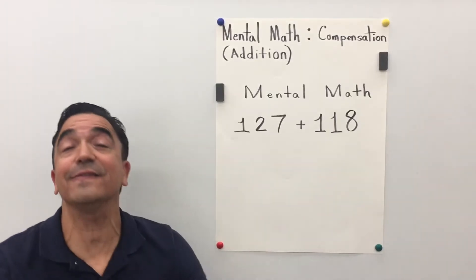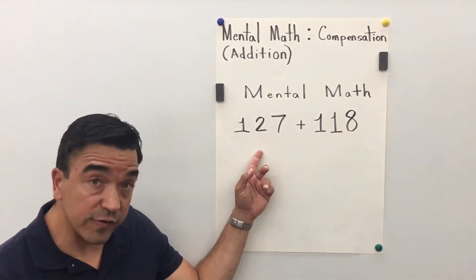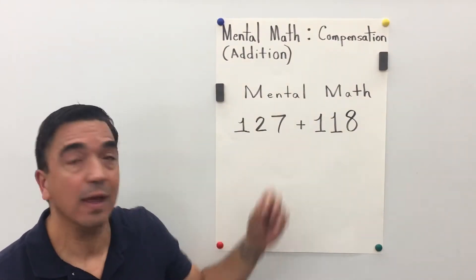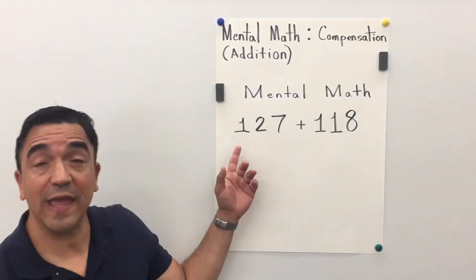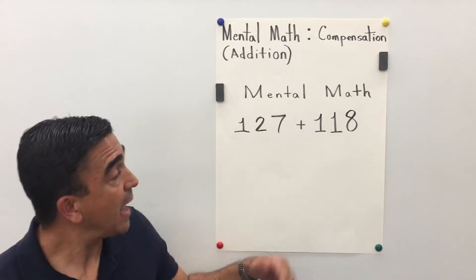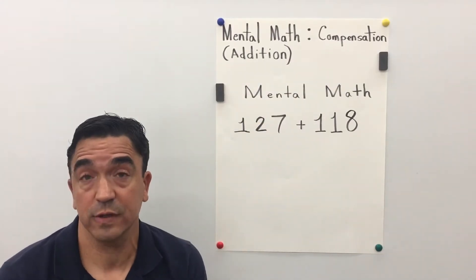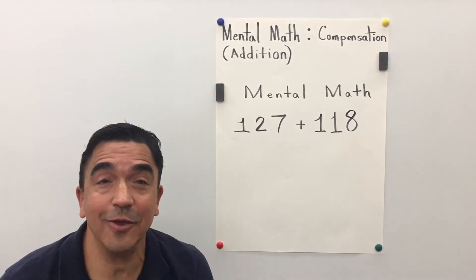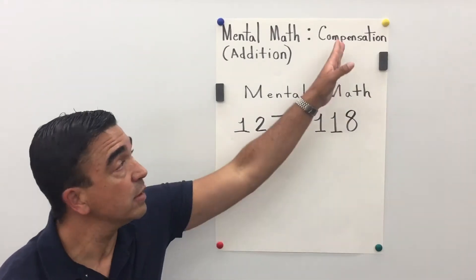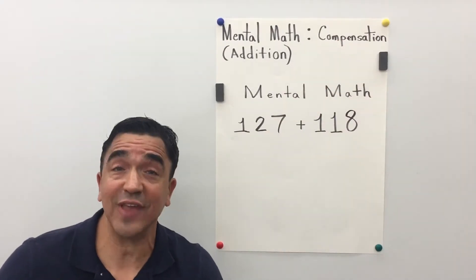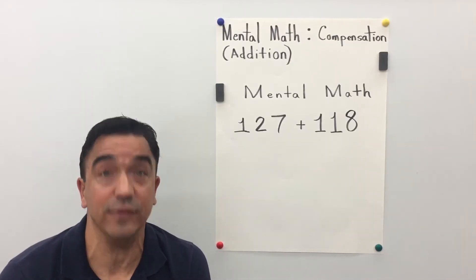Hi there, Coach Mike here. Today we are going to solve this horizontal multi-digit addition problem. A lot of people would take the 127 and put it above the 118 vertically to solve, but we're going to use mental math. In fact, we're going to use a strategy called compensation. Compensation is a mental math strategy for multi-digit addition.